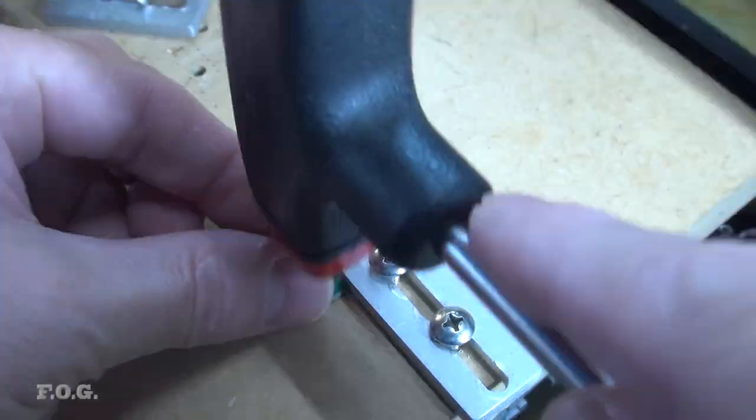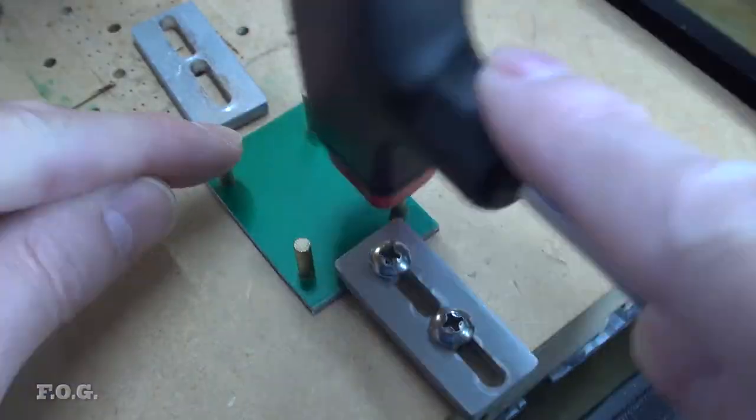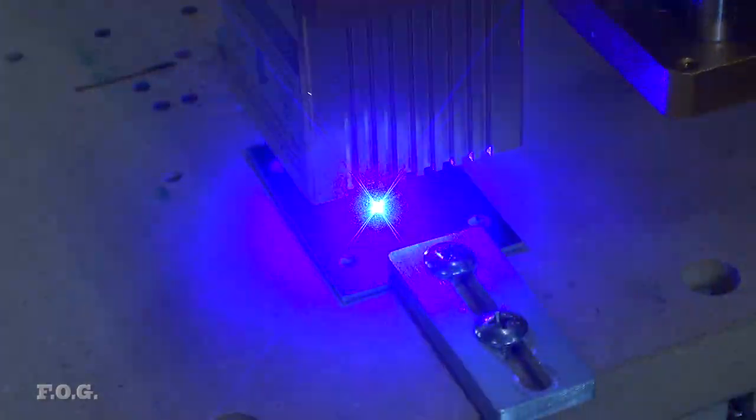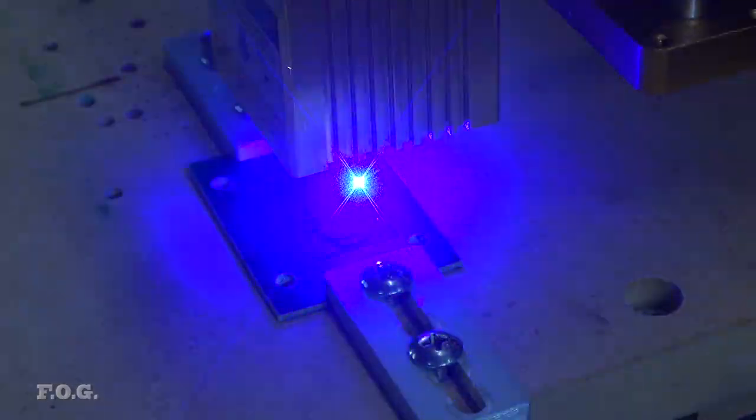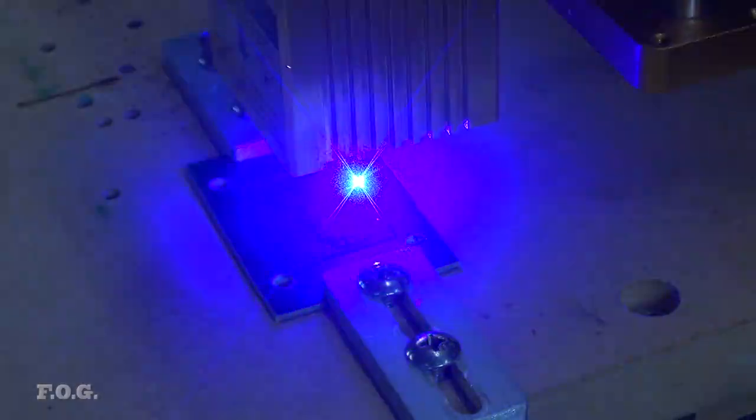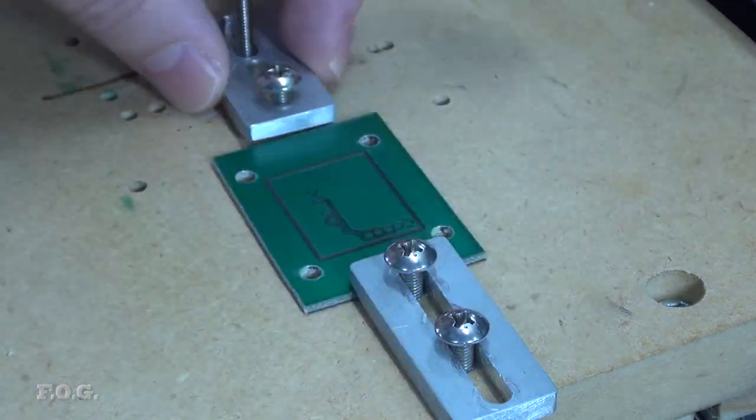Burning the front side resist pattern goes smoothly. Flip the board to the other side. Use the locating pins to relocate the board. On to burning the back side of the resist pattern. There's really only a couple of traces here, so it doesn't take very long. Let's get it off the CNC and take a look.